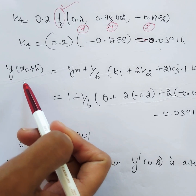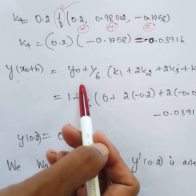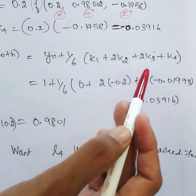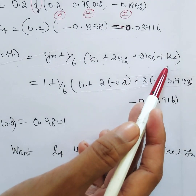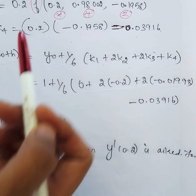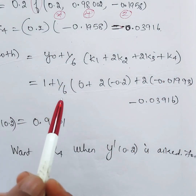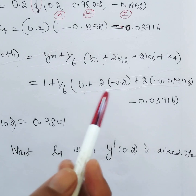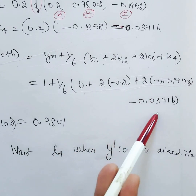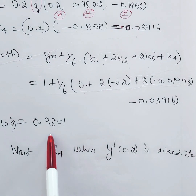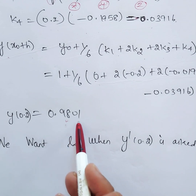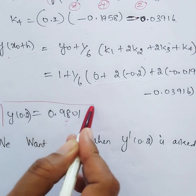The final formula is: y(x-naught + h) equals y-naught + (1/6)·(k1 + 2k2 + 2k3 + k4). We don't need L4 for this formula. Substituting k1 = 0, k2 = −0.02, k3 ≈ −0.01998, k4 ≈ −0.03916, we get y(0.2) ≈ 0.9801. This is your final answer.